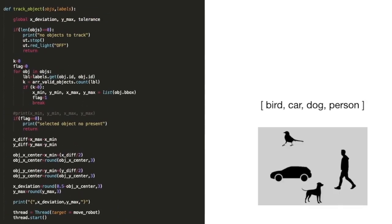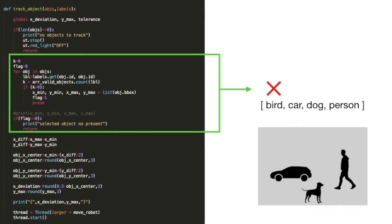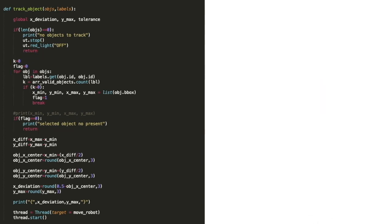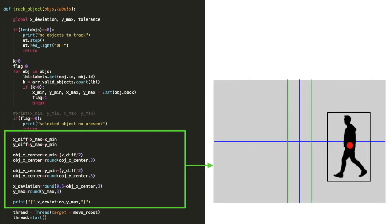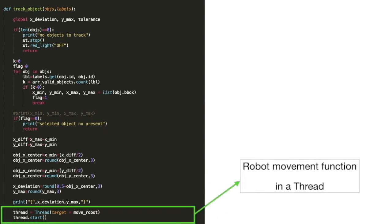Inside the tracking function, this part looks for the presence of a person and ignores rest of the objects. And this part calculates the deviation of the person from the center of the frame and bottom edge of the frame. Now that all the requisite parameters are available, move robot function is called inside a thread so that the main code goes on to process the next frame.